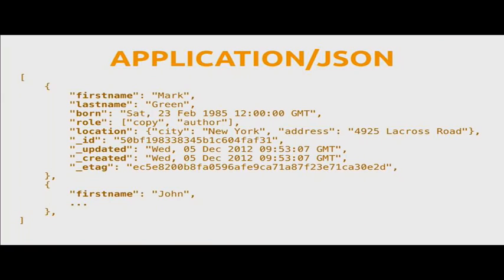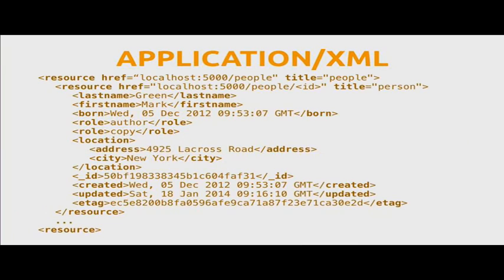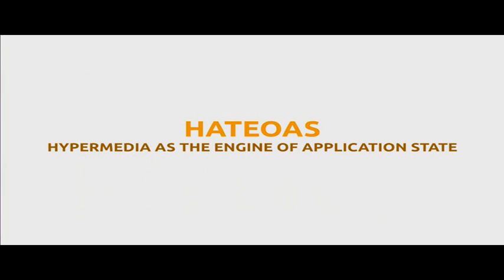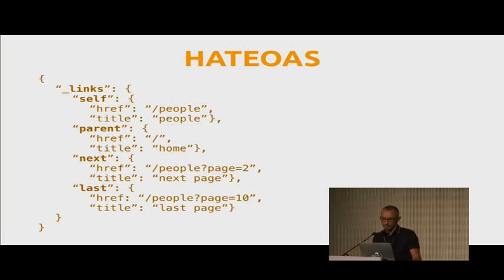By default, your API will support both JSON and XML. All the metadata field names are configurable by you, so you can change whatever you see to suit your needs. We already saw HATEOAS at work — you get the link to the same item, to the parent item, to the next page if pagination is enabled, and even to the last page. All these features are enabled by default, but you can switch them off — for example, if you don't want XML or HTML support.